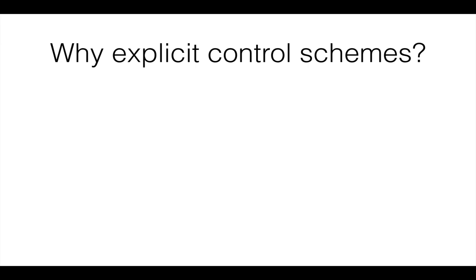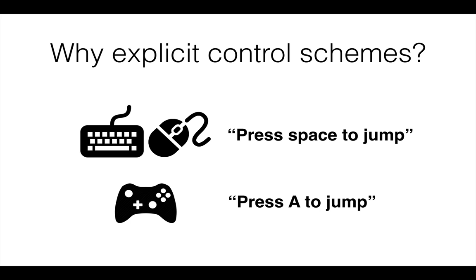So why do we have explicit control schemes? In the current input system you can specify the horizontal axis getting input from arrow keys and the left thumbstick, but it's not specified what belongs to which control scheme. One reason we want explicit control schemes is so the game knows which one is currently in use. If the player is using keyboard and mouse we show 'press space to jump,' while if they're using a gamepad we show 'press A to jump.' Prompts, tutorial text, and many other things benefit from showing the correct instruction based on what the player is actually using.